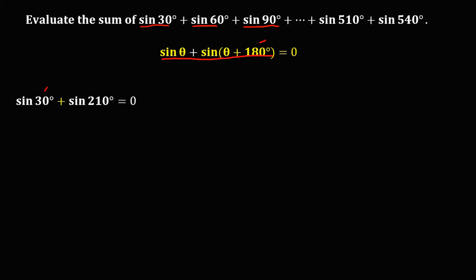Then for sin 60° plus sin(60° + 180°) = sin 60° + sin 240°, this is equal to 0. Then for sin 90° + sin(90° + 180°) = sin 90° + sin 270°, that's also equal to 0.